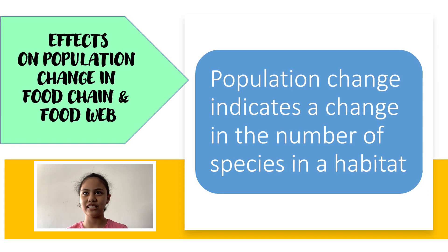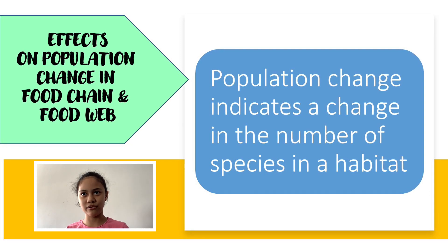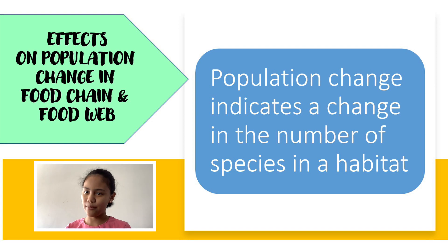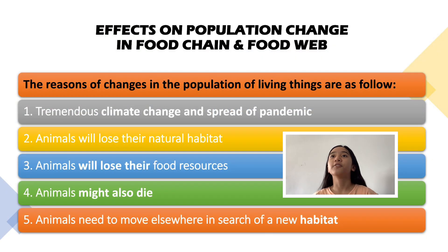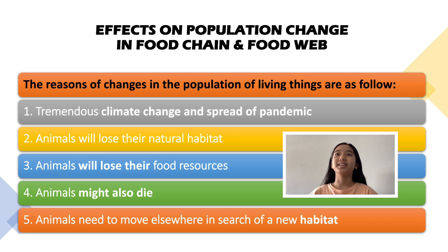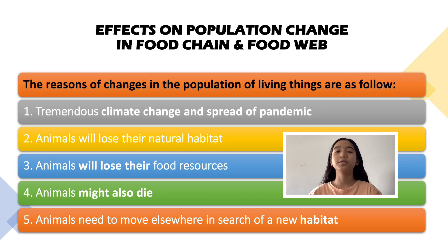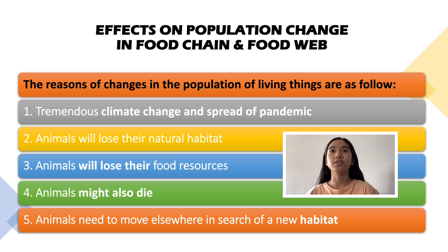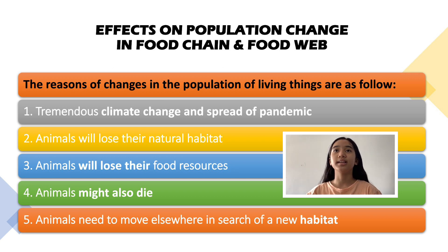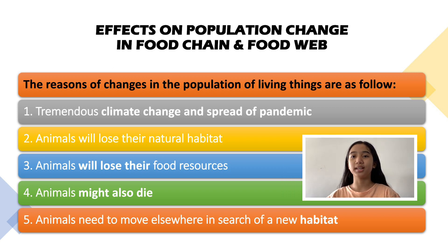For this topic, population change indicates a change in the number of species inhabiting an area. The reasons for changes in the population of living things are as follows. Firstly, tremendous climate change and the spread of pandemic. Secondly, animals will lose their natural habitat. Thirdly, animals will lose their food resources. Fourthly, animals might also die. And lastly, animals have to move elsewhere in search of a new habitat.